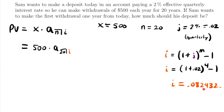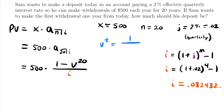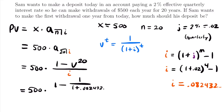Writing out the annuity formula, this equals 500 times (1 minus the present value factor to the power of N) divided by I. The present value factor V^T equals 1 divided by (1 + I)^T. So rewriting: 500 times [1 minus 1/(1.082432)^20] divided by 0.082432.